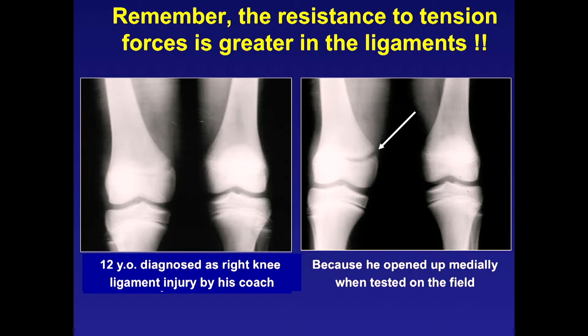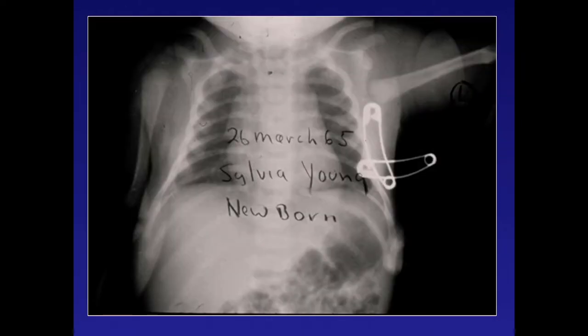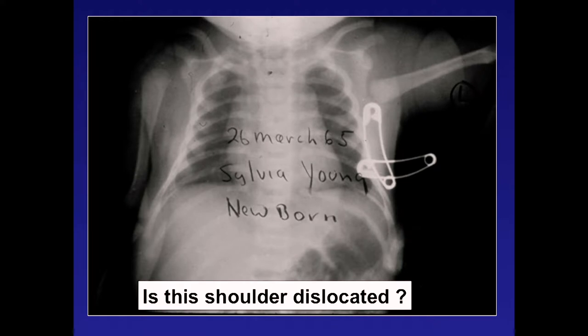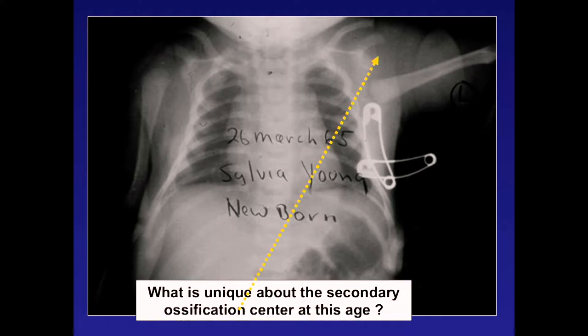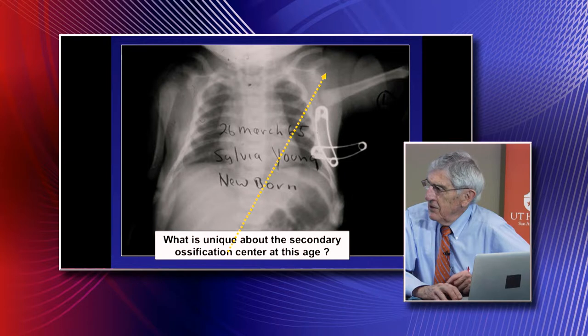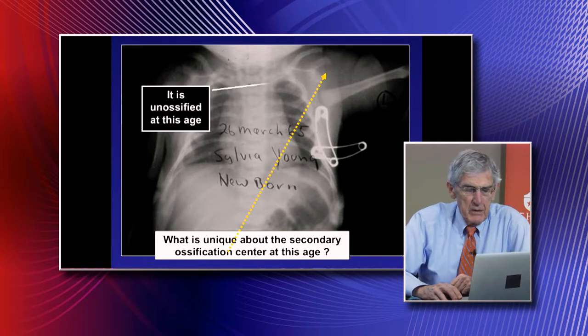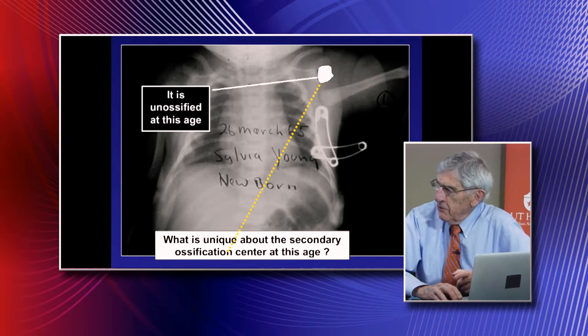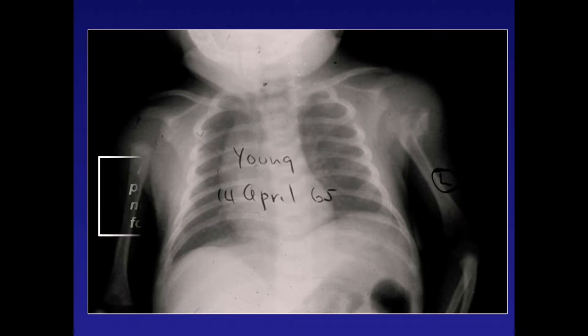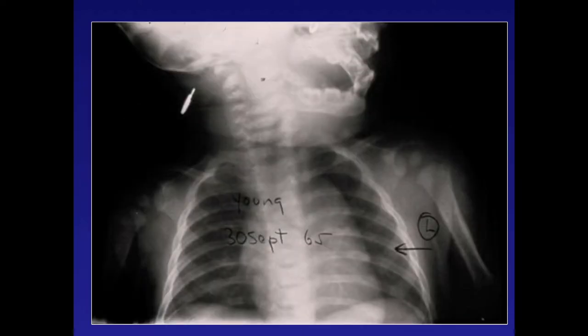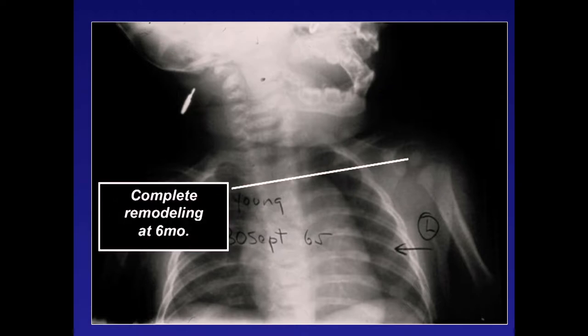Here's a newborn baby born in 1965 with a shoulder dystocia—afterwards her arm was displaced. They said she had a dislocated shoulder, but the secondary ossification center at this age is not yet ossified. So she actually had a fracture through the proximal humeral physis. When reduced, you can see new bone formation. She went on to heal, and in six months had complete remodeling.